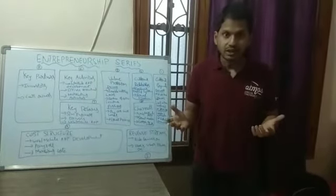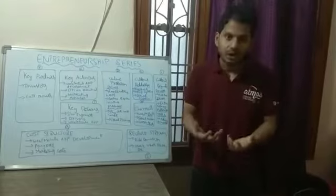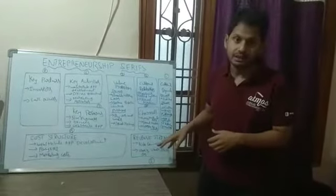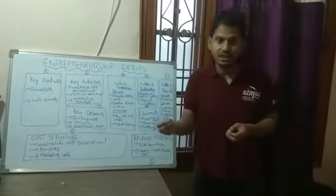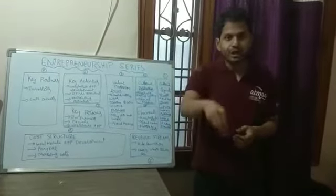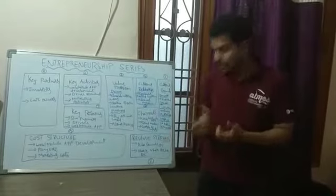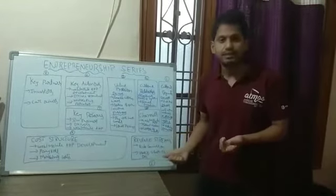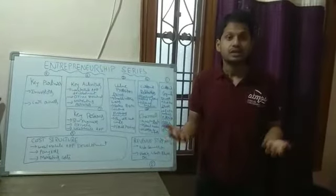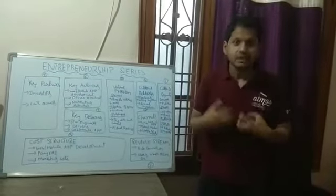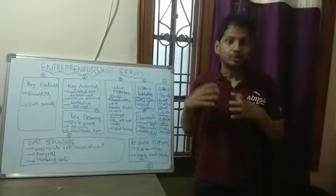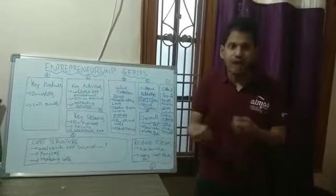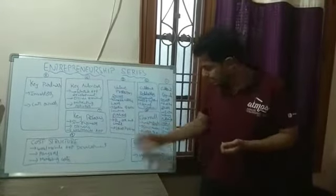Then revenue streams. You have developed a product — how are you going to earn money from it? If you see Uber as an example, they earn through ride commission. If you travel from source to destination and it costs 100 rupees, 14 to 20 rupees goes to Uber. They also have other platforms like UberX and Uber Foods through which they earn money. Revenue streams tell you what all sources you have to earn money out of your product.